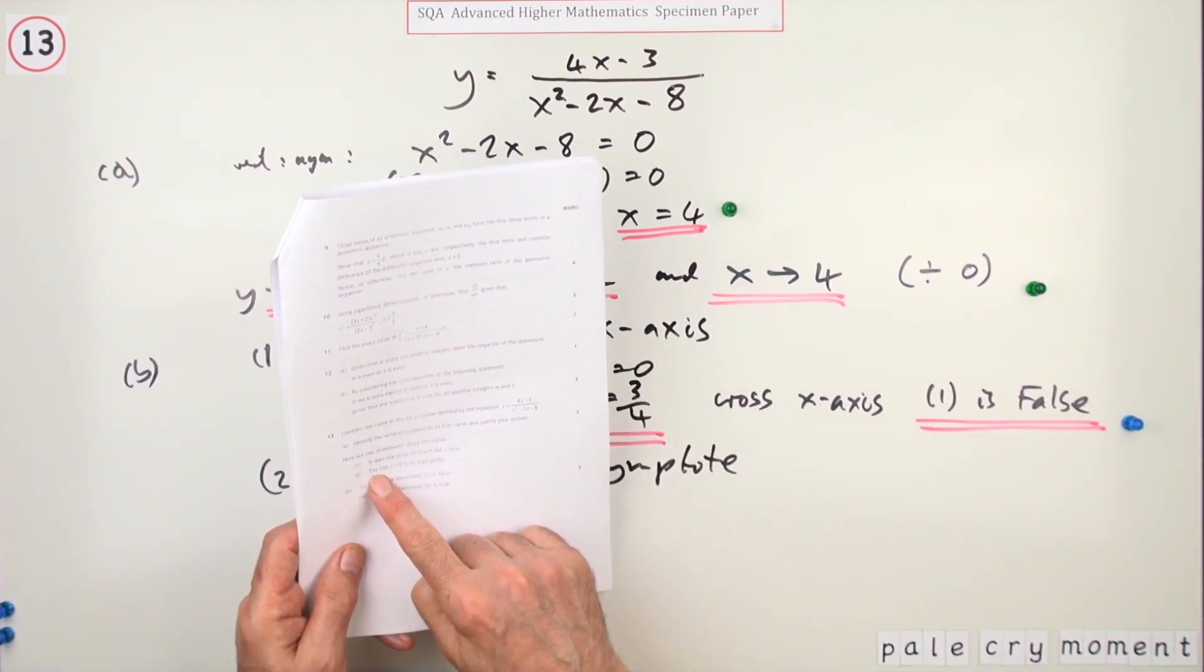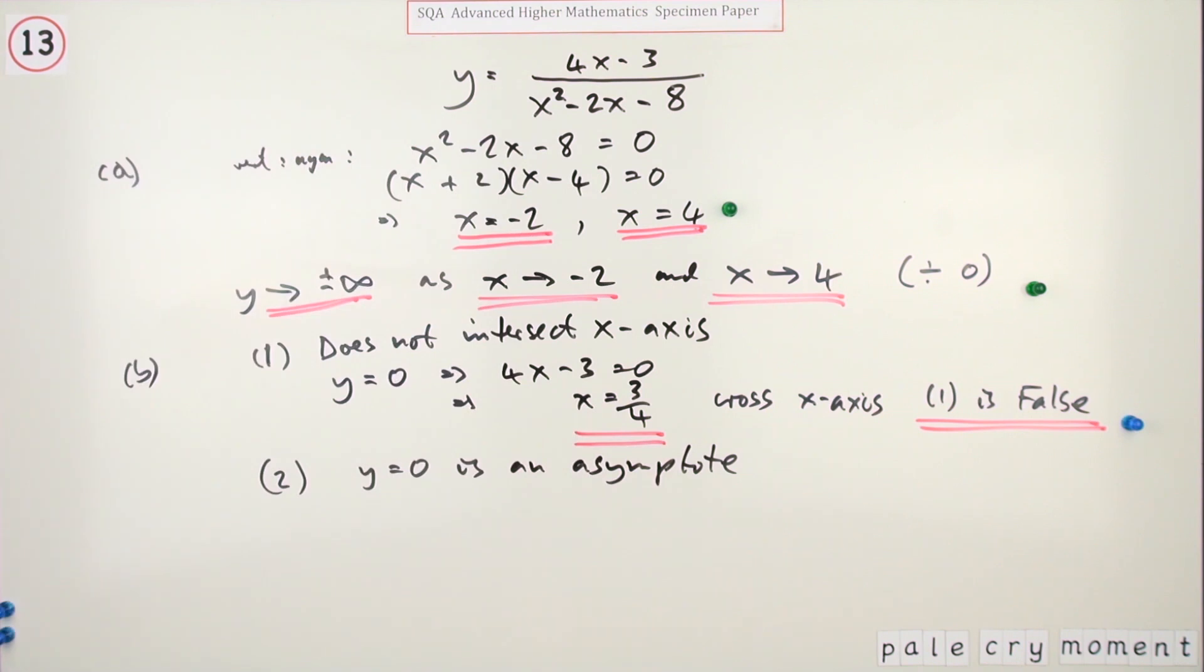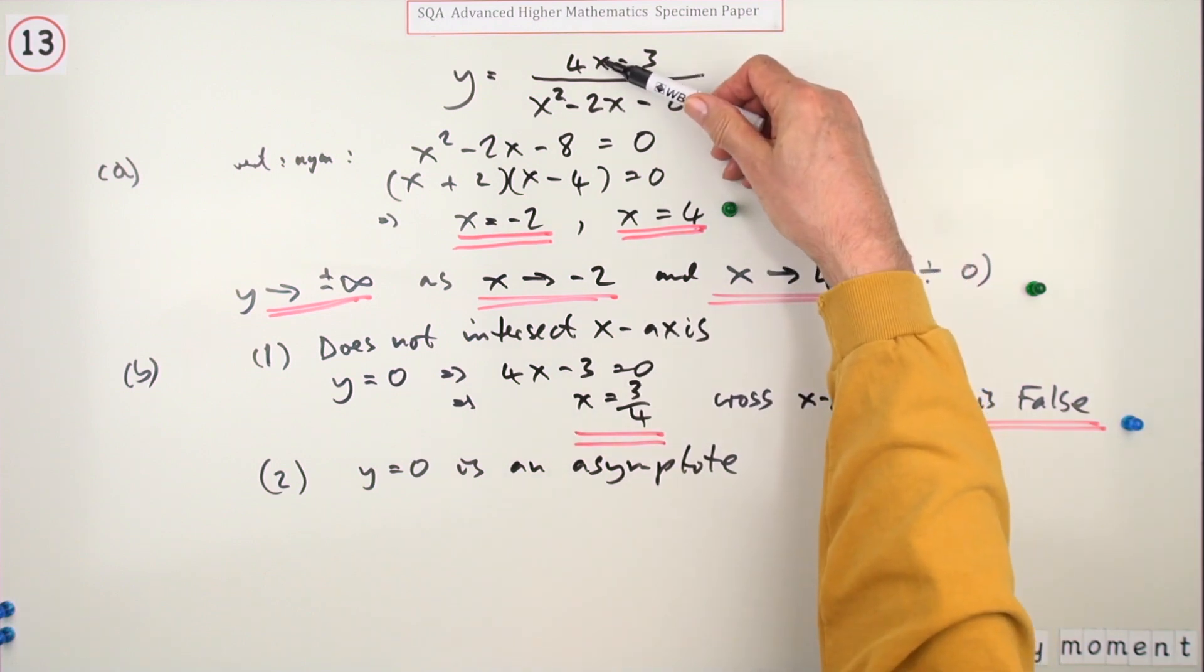Second one: the line y equals zero is an asymptote. Now this means, what does this graph tend towards? What does it look like when x gets very big? Well, when x gets very big, the dominant term on top will be the 4x, and the dominant term on the bottom will be the x squared.